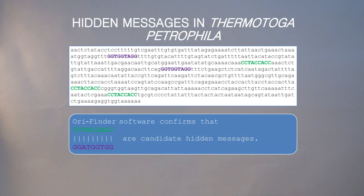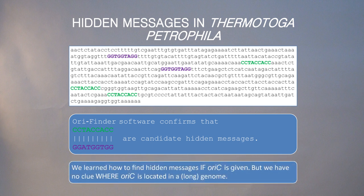Now let's decide which one of these six 9-mers represents the real DnaA box. Let's consult OriFinder software, which tells us that it looks like the one shown on this slide. And we learned, therefore, how to find frequent words and hopefully DnaA boxes in any bacterium.